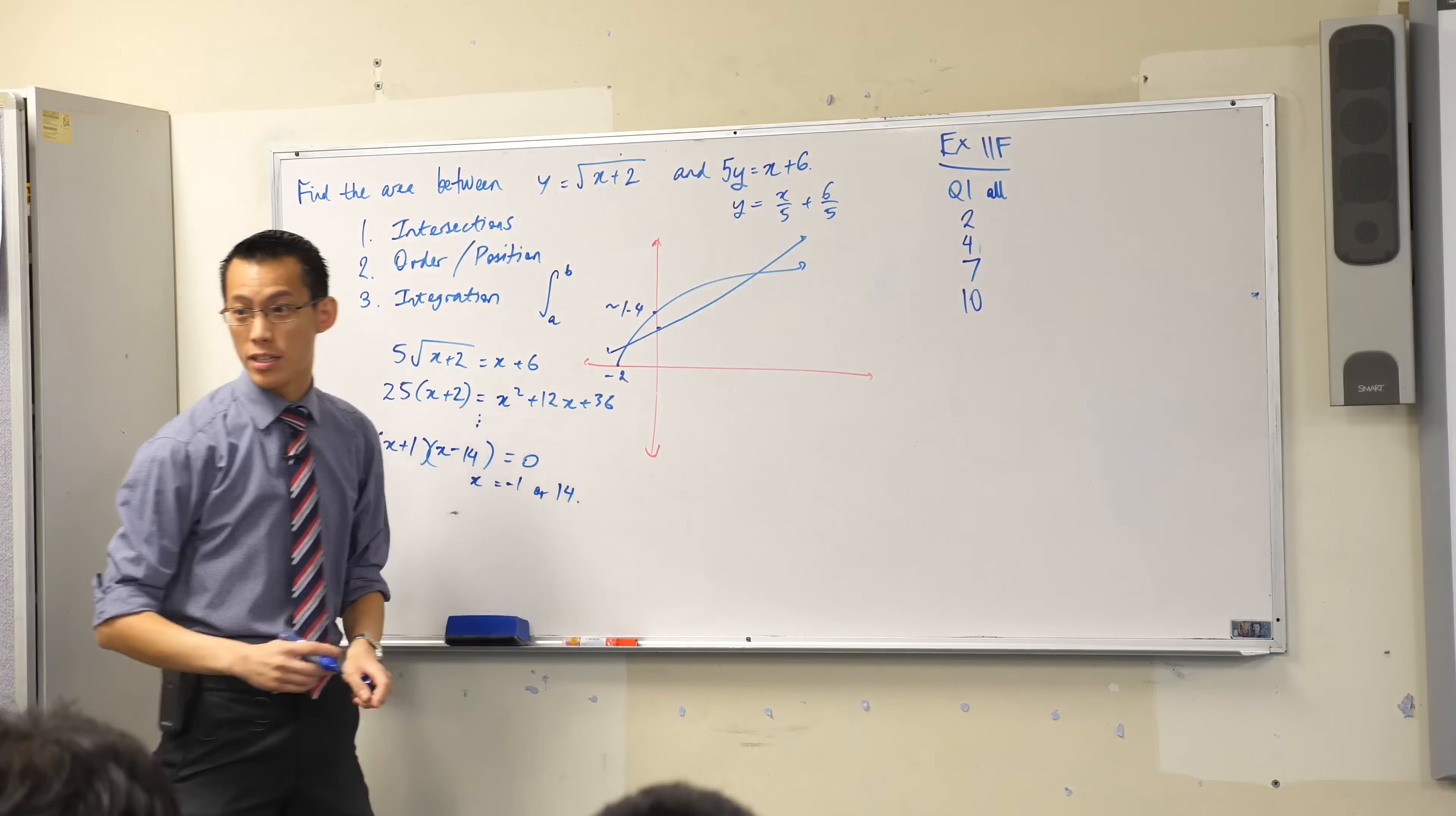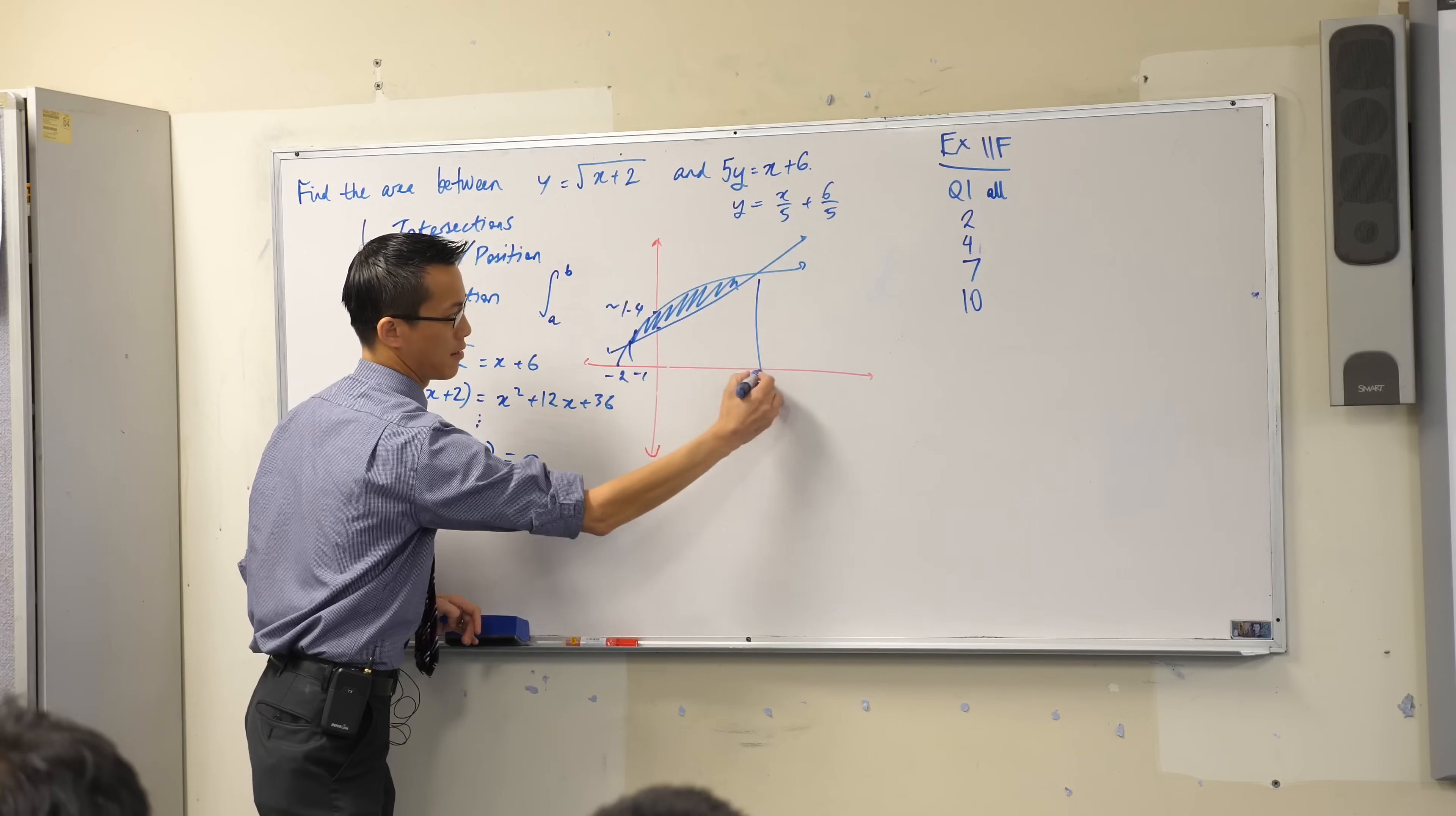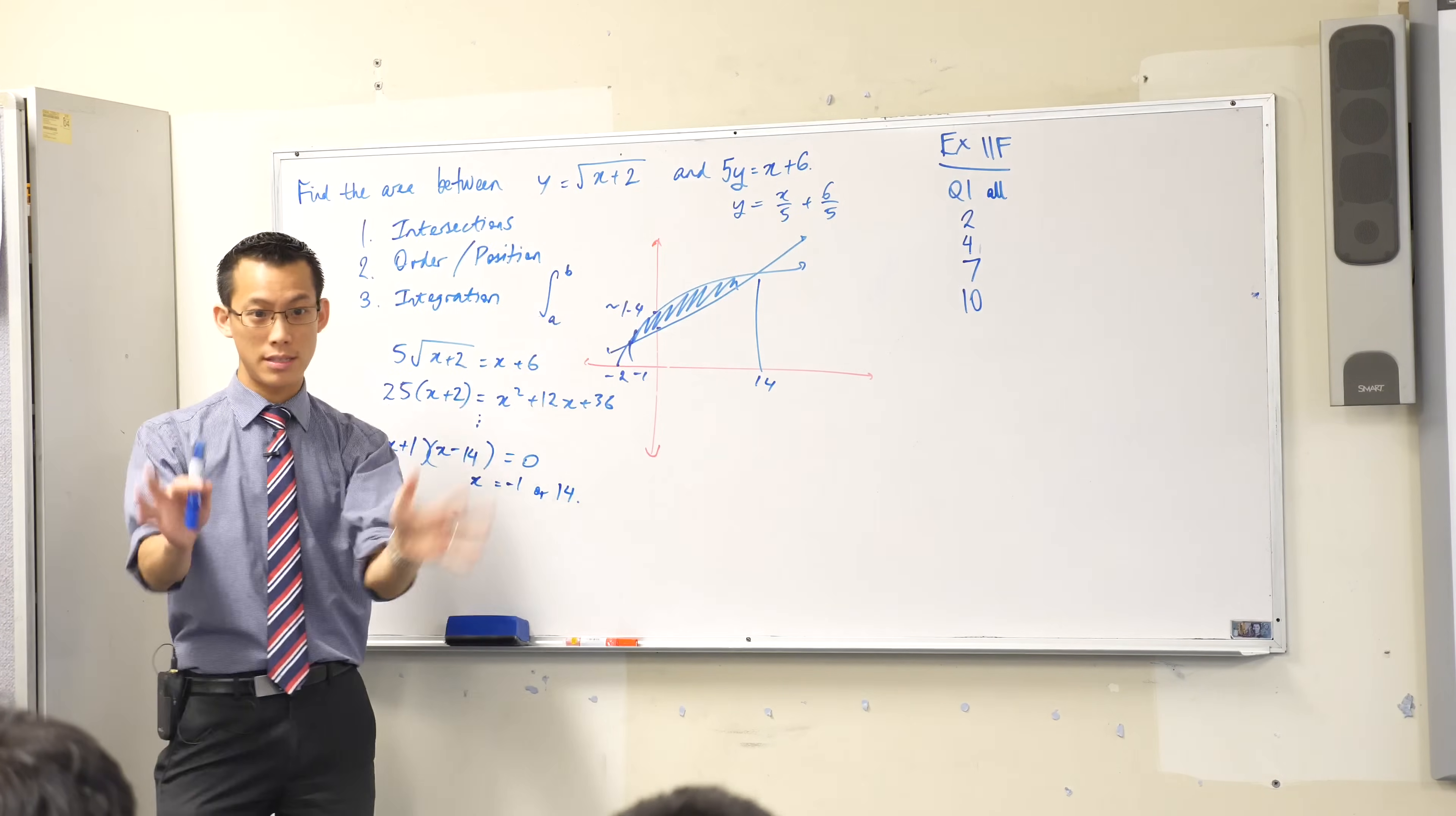Now, this scale is pretty horrendous, but it doesn't matter because I just have my rough picture and now I know where the area is. You can see how bad my scale is. You just have to forgive me for that. But it's served its purpose, hasn't it? I can easily determine order and position from this because I can clearly see in this little spot what's above what. Does that make sense?